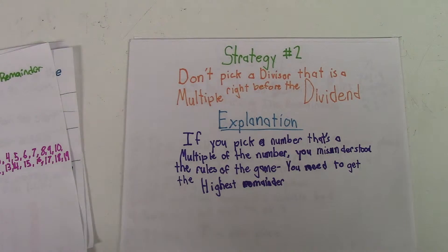For example, if the start number was 81 and you pick 9, then you're not going to get any remainder. Or like if you pick 4, it's going to go up to 80. 4 times 20 is 80, so you're only going to get 1 as the remainder.